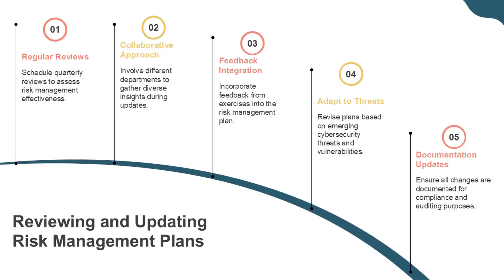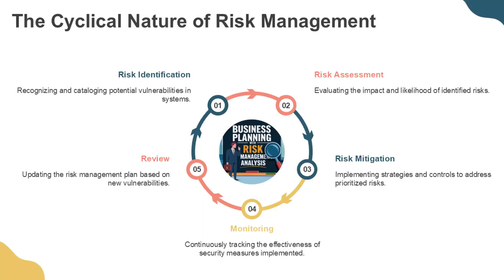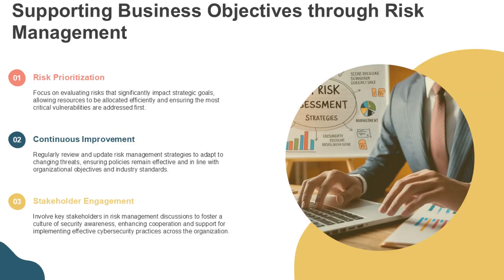The final step acknowledges that cybersecurity risk management is not a one-time effort, but a continuous process that requires vigilance and adaptation. This ongoing phase involves continuously monitoring the effectiveness of implemented controls and security measures, adapting strategies to address evolving threats and changing business environments, conducting regular tabletop exercises that include executives, board members, IT departments, and PR teams, and reviewing and updating the risk management plan based on new vulnerabilities, threats, or organizational changes. Regular testing is crucial to validate what works in the plan and what needs improvement.